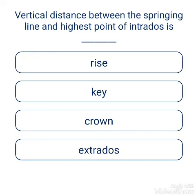The vertical distance between the springing line and the highest point of the intrados is called the rise. Options: rise, key, ground, extrados. The answer is rise.